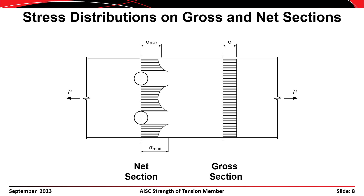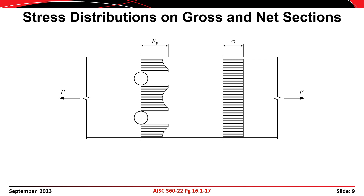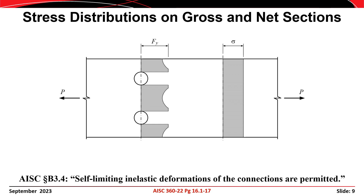The stress distributions illustrate that at the gross section, the distribution of stress is approximately uniform. On the net section, however, the distribution of stress is not uniform because the stress has to flow around the holes, resulting in concentrations of stress near the holes. These are distributions of elastic stress when the load is well below the strength of the member. As the force P increases, the peak stresses near the holes also increase until they reach the yield stress. Yielding on the net section is not considered a limit state because it will be localized and will not lead to excessive elongation.